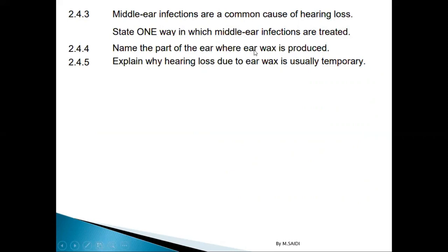Name the part of the ear where ear wax — cerumen — is produced. That is the auditory canal. Explain why hearing loss due to wax is usually temporary. It means that you can remove the wax and then return to the normal hearing process — you can hear normally again.